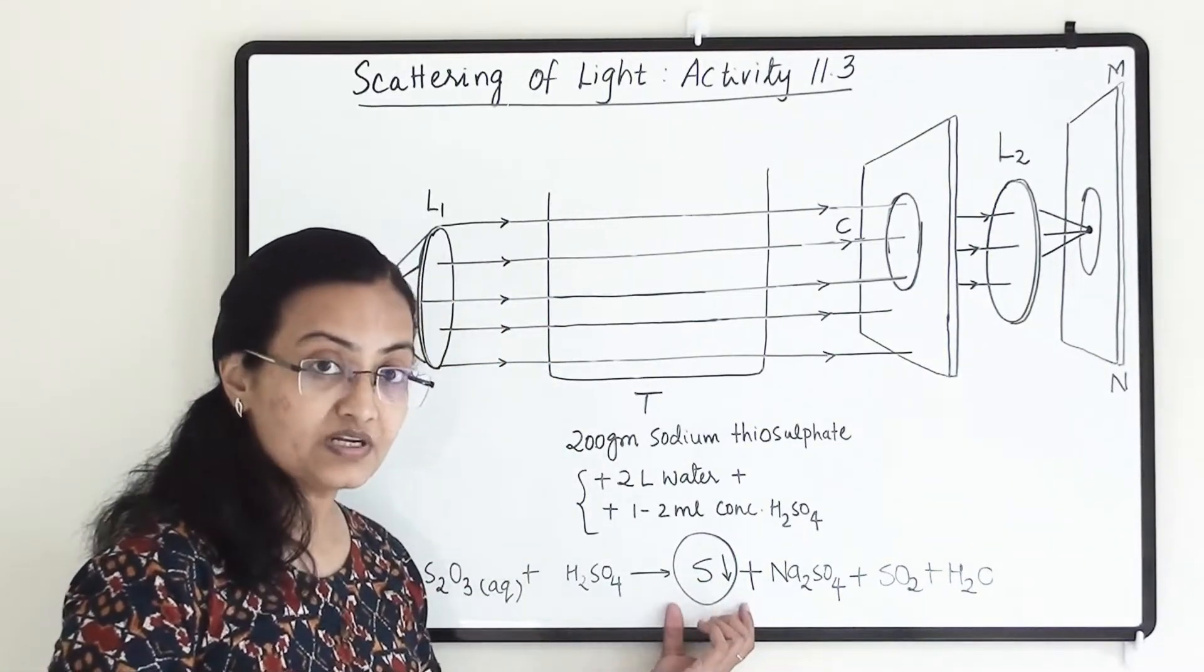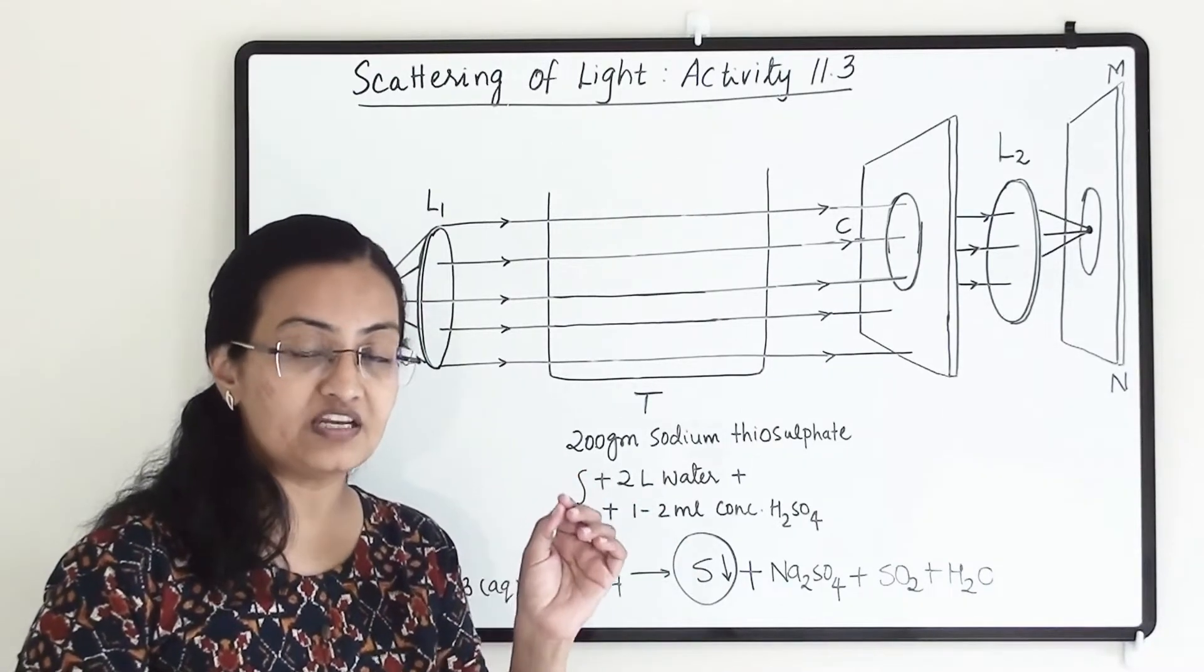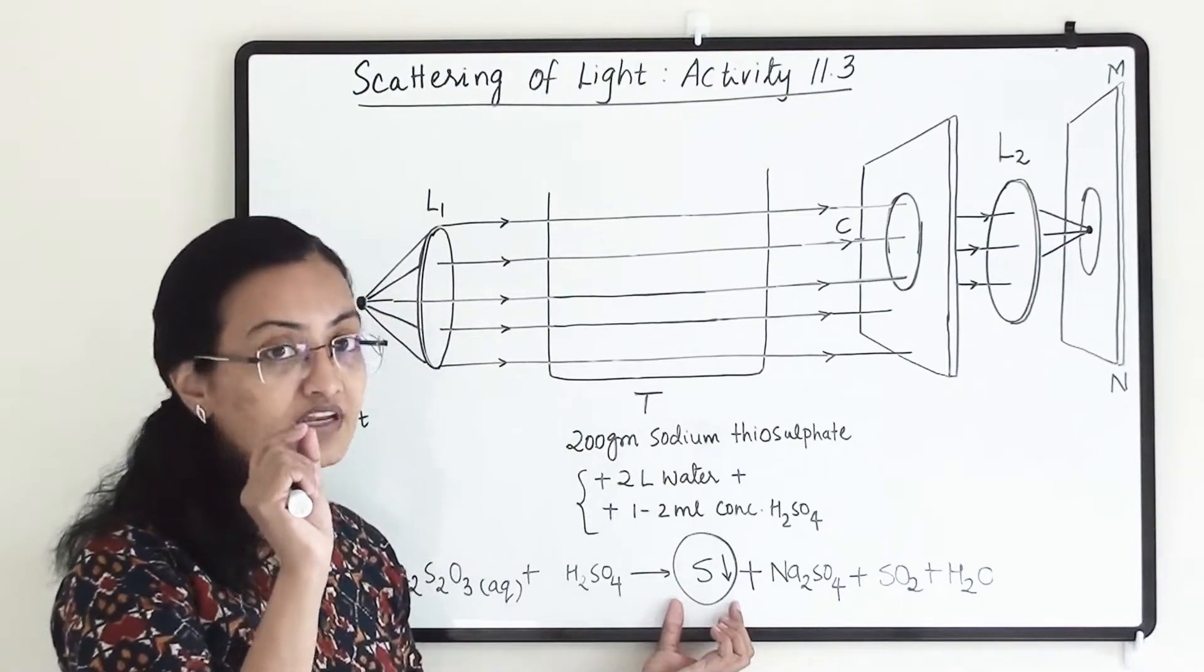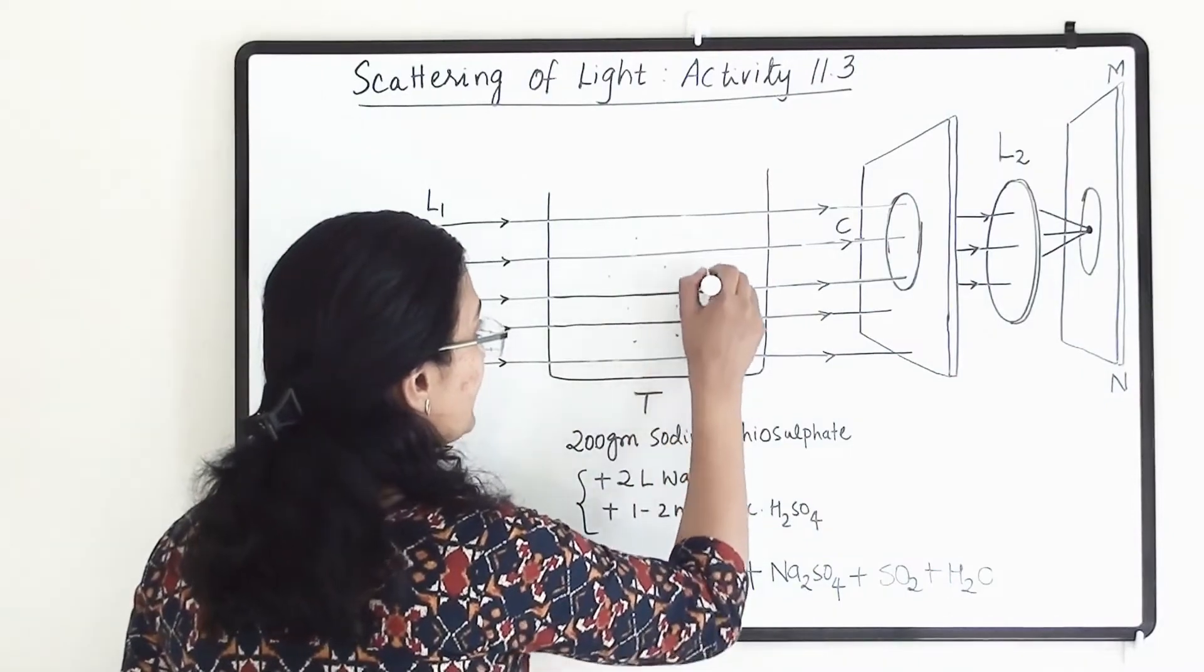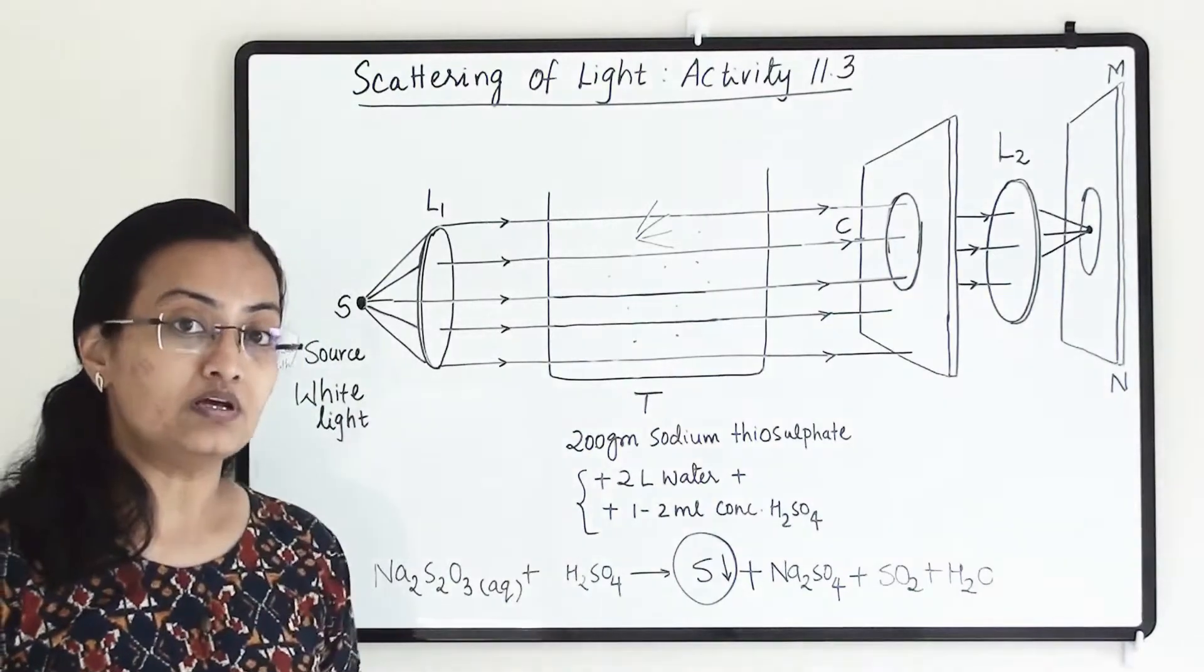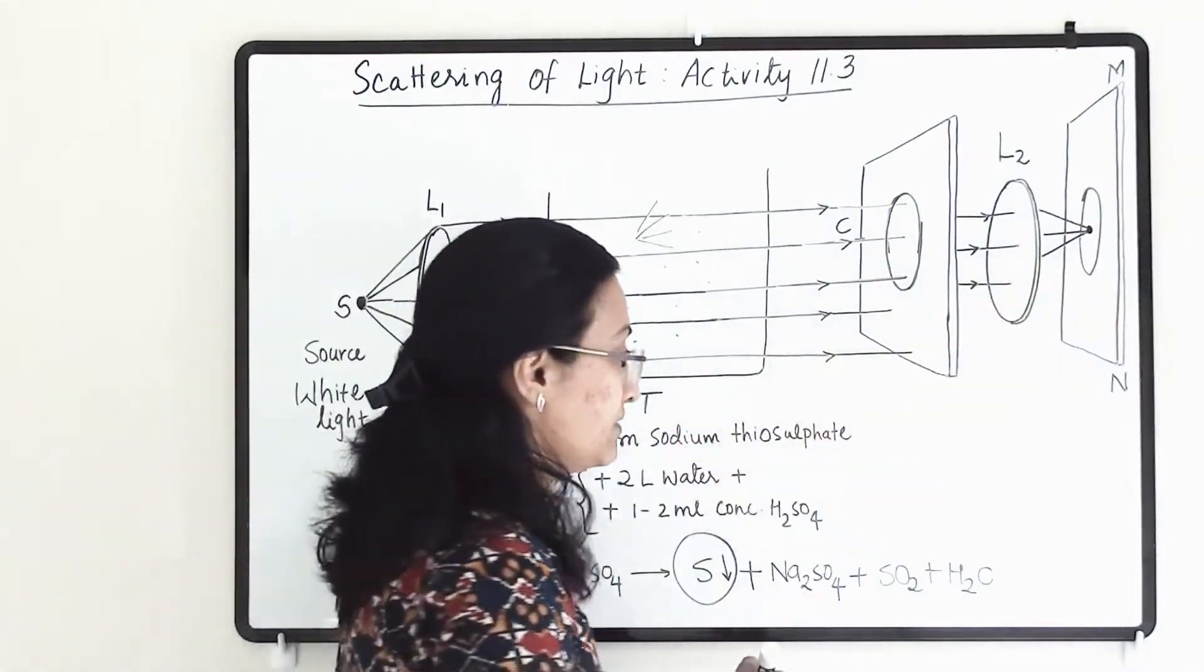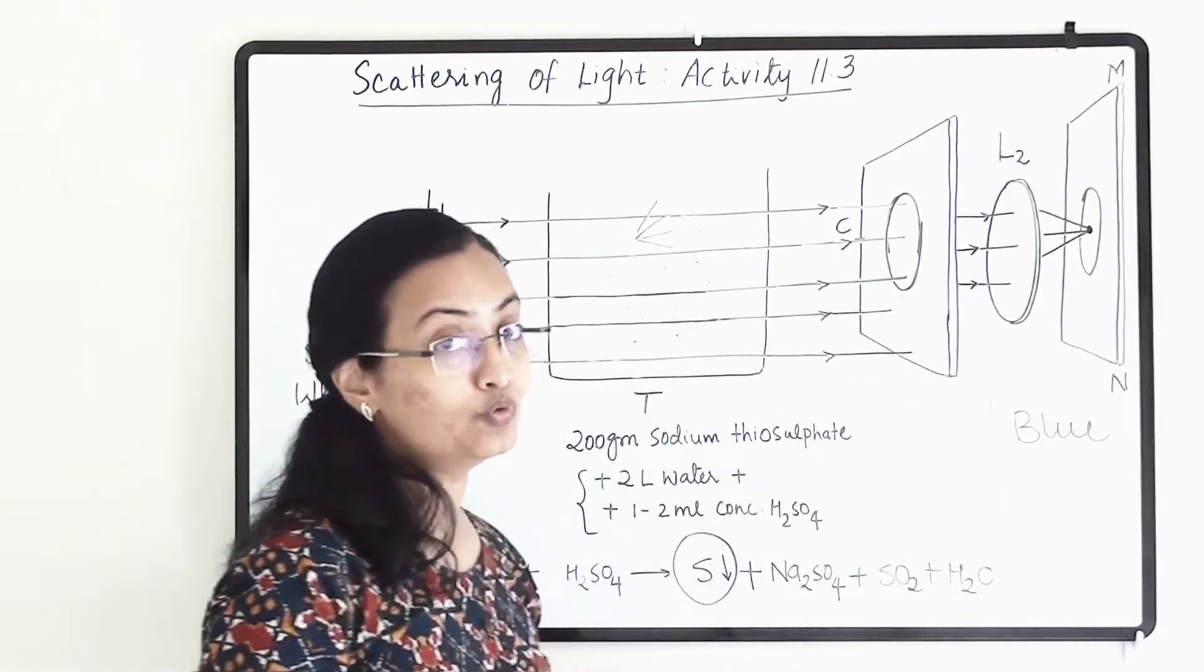And within first two minutes the particles will be very very small. When it will start forming the particles into the tank, the particles will be very very minute. When the particles are very small at that time it will scatter light and it will scatter blue color light because particle size is very very small and because of that here we will be able to see blue color light. So first when particles are very small we'll be able to see the blue color light.